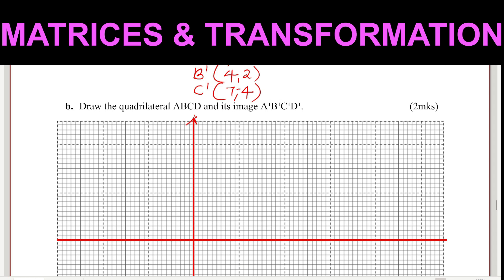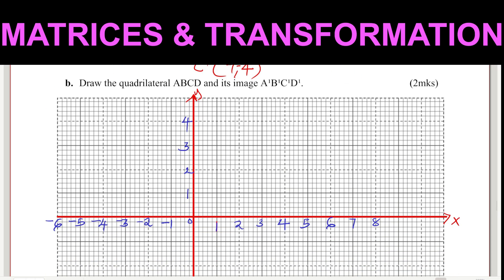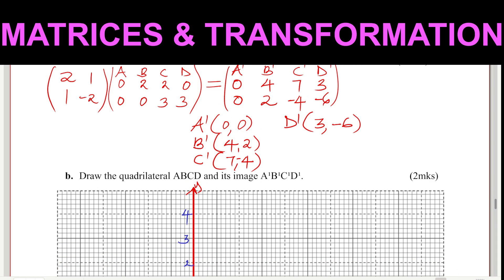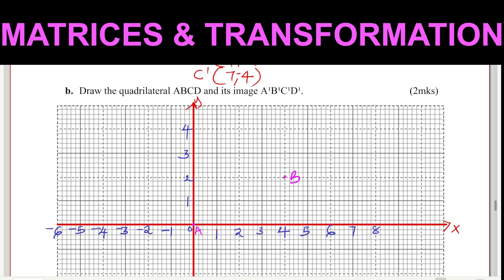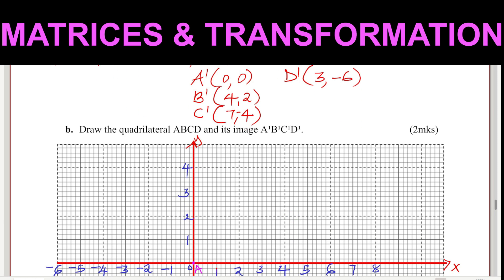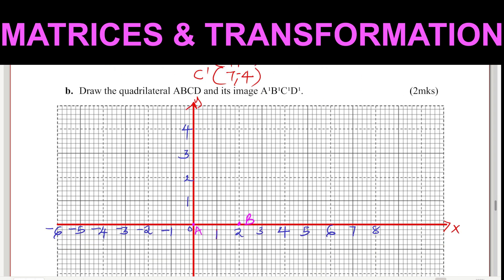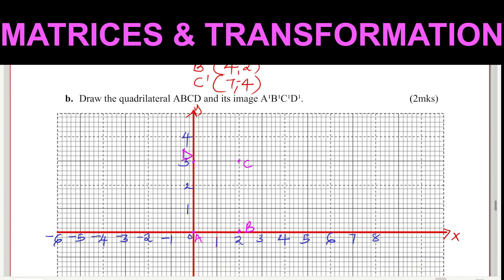Drawing the y-axis and x-axis. Marking values: 1, 2, 3, 4, 5, 6. Now plotting A, B, C, D. A is at (0, 0) — so A is at the origin. B is at (2, 0) — so B is here. C is at (2, 3) and D is at (0, 3). Joining these points gives us the quadrilateral ABCD.